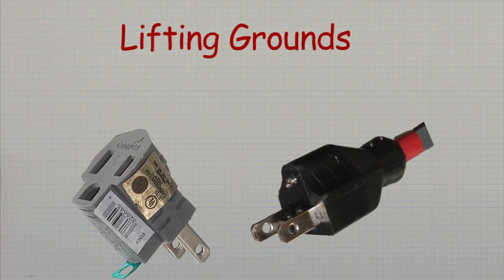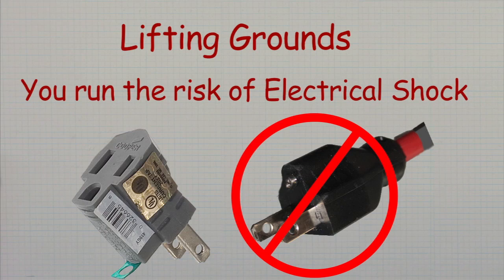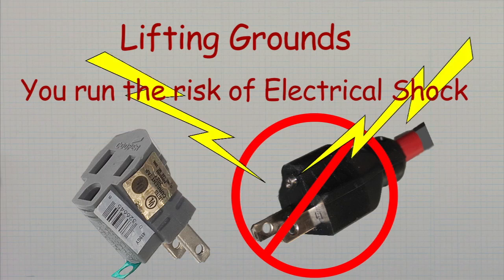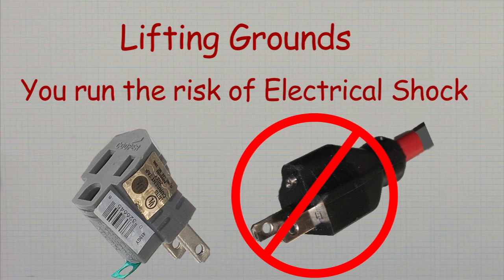Sometimes the quickest way to get rid of a ground loop hum is to just get rid of the ground. But lifting or removing the electrical safety ground on a plug is never a good idea as it exposes you to the risk of electrical shock. But if you have to, use a ground lifting adapter and don't cut off the ground pin.